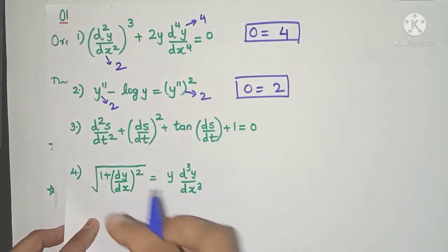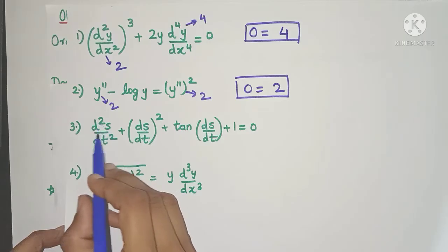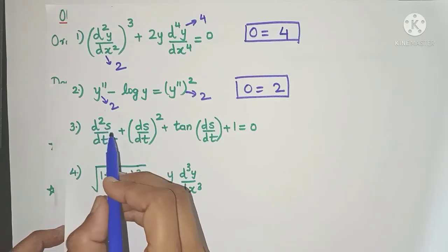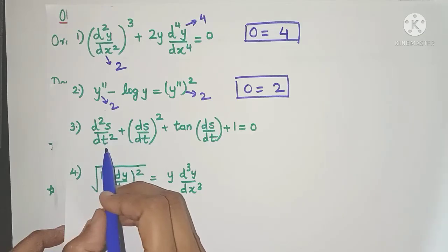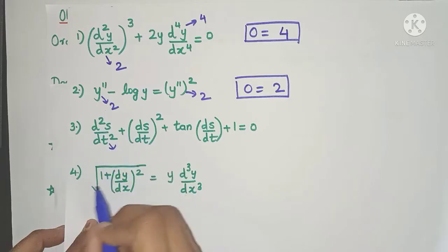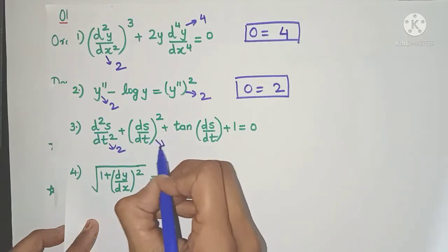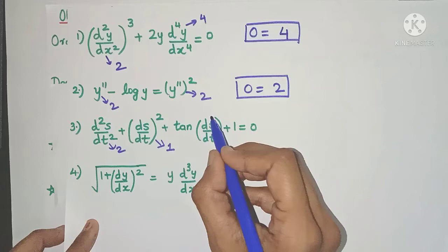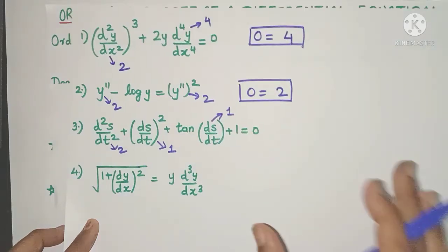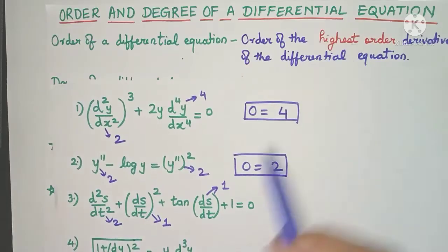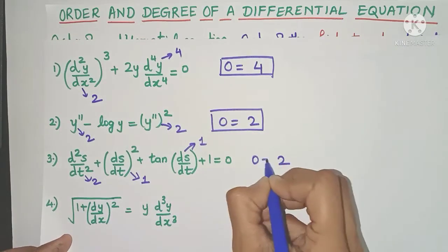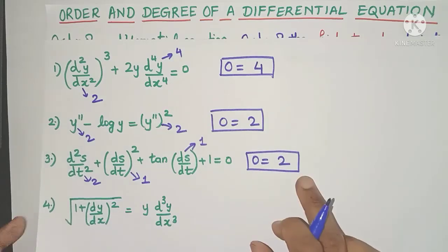In the third example, we have d²s/dt², where the dependent variable is s and the independent variable is t. The order of d²s/dt² is 2. There are also first order derivatives present. The highest order derivative is 2, so 2 is the order of this entire differential equation.